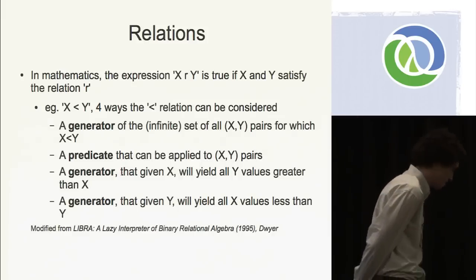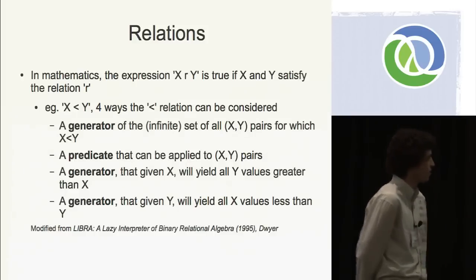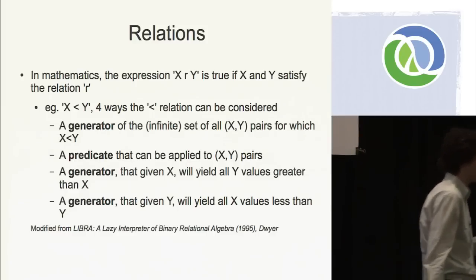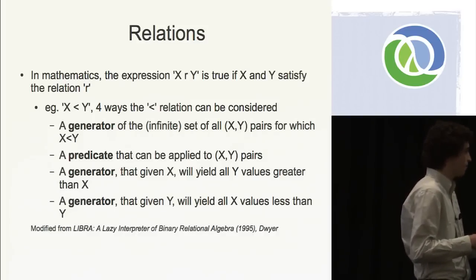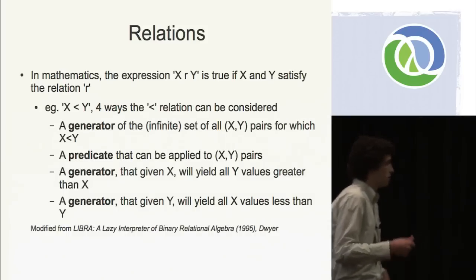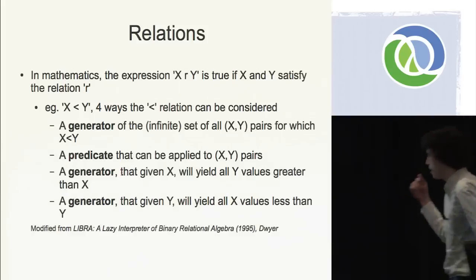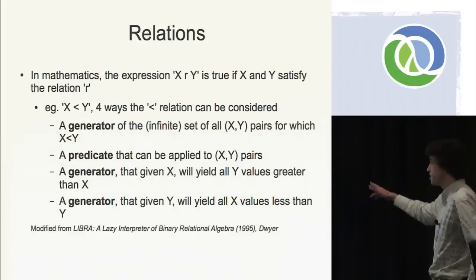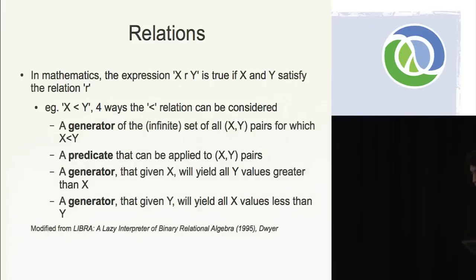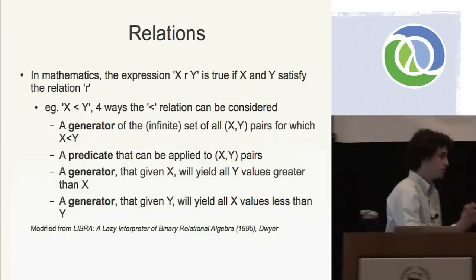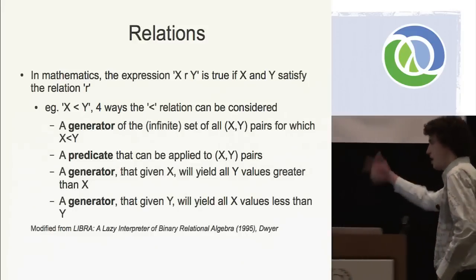The first way, we can consider it as a generator of the infinite set of X, Y pairs where X is less than Y. If X and Y are both inputs — both ground values or numbers, which I'll define later — we can use it as a predicate: we can say X is less than Y. We also have two more specific generator cases: if we give an X, it'll yield all the values of Y that are greater than X, and vice versa.